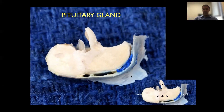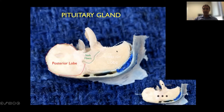The pituitary gland, seen here in a side view with a midline midsagittal cut, has an anterior lobe which is larger and produces a number of hormones. Then we have a posterior lobe that is smaller — the neurohypophysis. And in between, there is something called the pars intermedia.